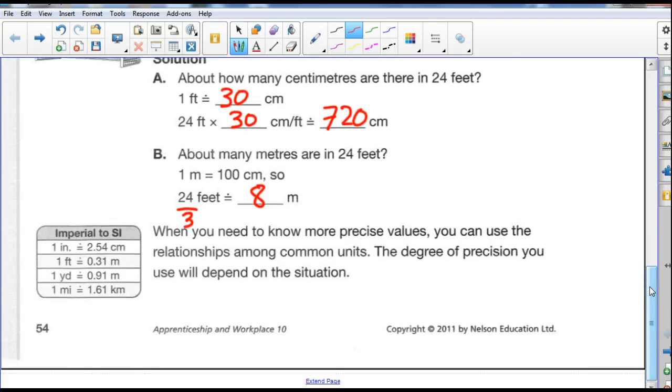So when you need to know more precise values, you can use the relationships among common units. The degree of precision you use will depend on the situation. So, right here, you can see our close conversion measurements. So, 1 inch is 2.54 centimeters, 1 foot is 0.31 of a meter, 1 yard is 0.91 of a meter, and 1 mile is 1.61 kilometers. So this right here is the chart that you would use to do your converting.